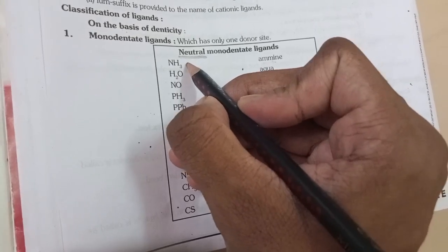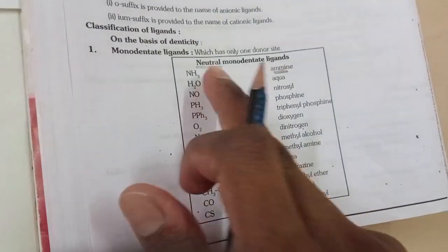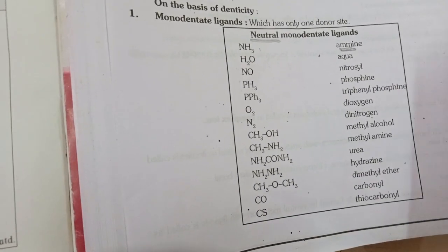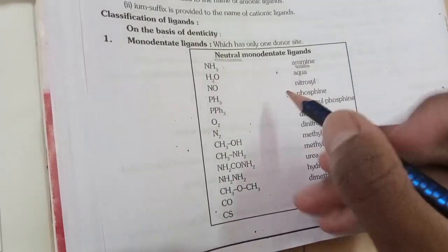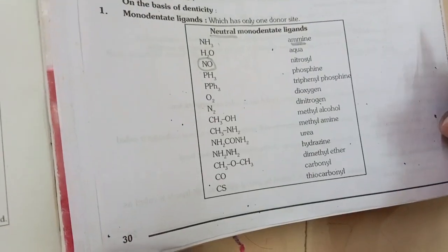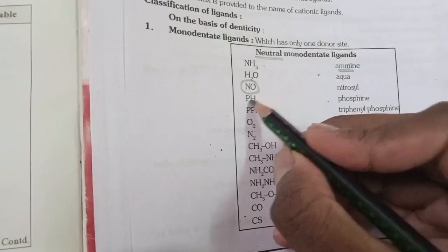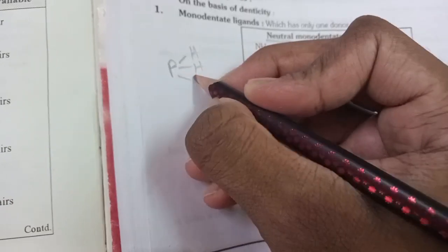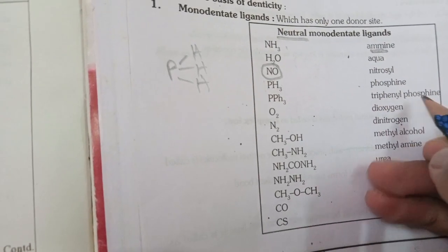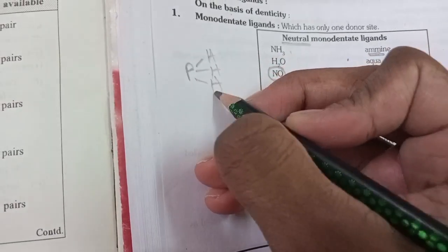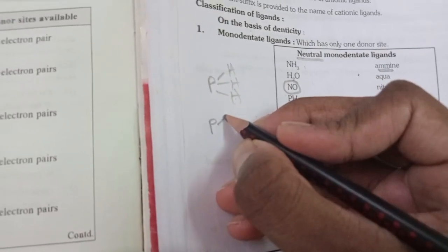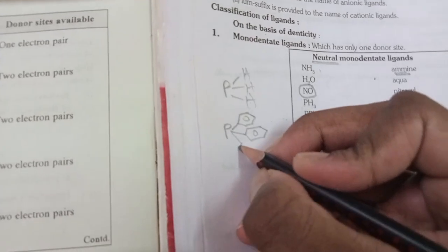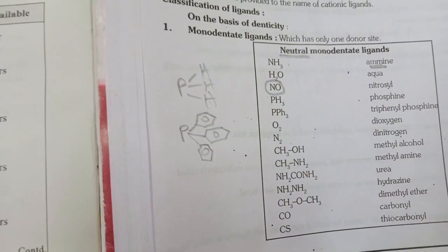Neutral ligands include ammonia (NH3), also called amine, and H2O (water). We also have nitrosyl. Then Ph3P — phosphine — which is a very simple matter.